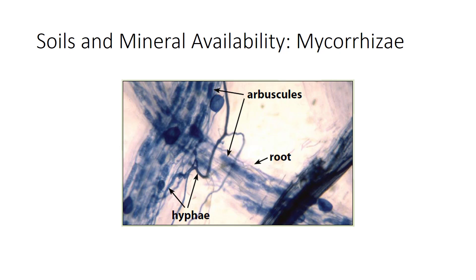In conclusion, soil is important and contains essential elements needed for the plant. Too little or too much of these elements affect the metabolism of the plant. Mineral availability is affected by weathering, acidity, and plant functions.